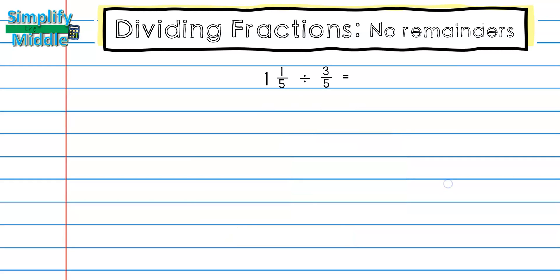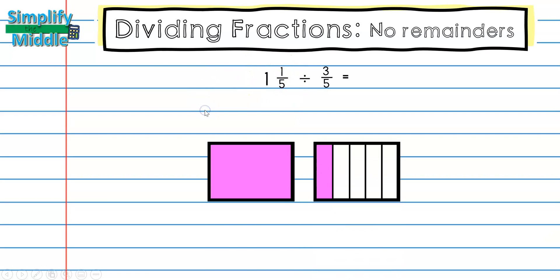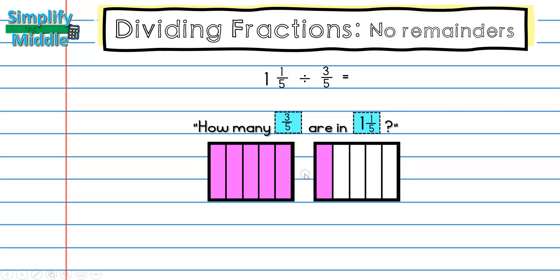Let's try another example. This time we have one and one-fifth divided by three-fifths. First, I'm going to draw my dividend, which is what I have: one and one-fifth. Next, I'm going to ask myself how many groups are in what I have. My groups here would be three-fifths. So how many three-fifths are in one and one-fifth? Before I can start counting my three-fifths, I need to make sure that my wholes are all in fifths, so I'm going to split this whole into fifths. Now that my whole is all in fifths, I can look at how many groups — the numerator three tells me what's in a group. Last time we used circles to show groups; this time we'll use brackets, but they mean the same thing.